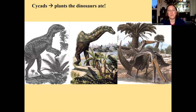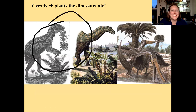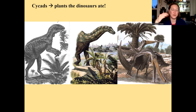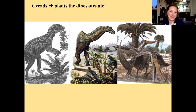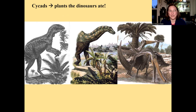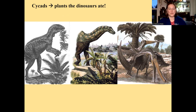One of my favorite slides of the whole semester is this old drawing of a dinosaur eating a cycad. Dr. Casper, who used to teach the class before he retired, always made a big deal about cycads being plants that dinosaurs ate, and I like to keep that going. It's kind of cool that there are still plants on Earth right now that you can go look at — or even buy as a house plant — knowing that one of its ancestors might have been eaten by a dinosaur.